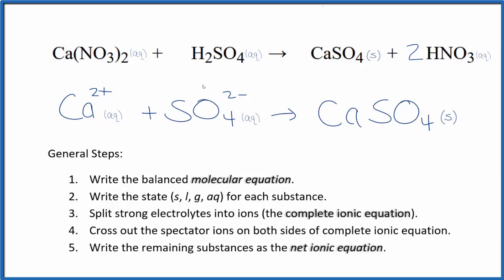We have 2 plus, 2 minus. That gives us a net charge of zero. And then over here, this is neutral, net charge of zero.